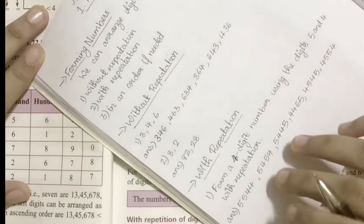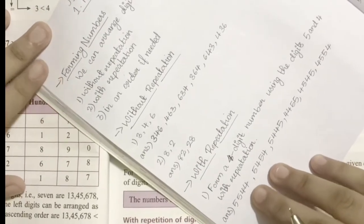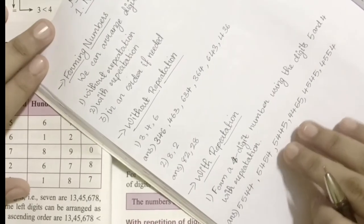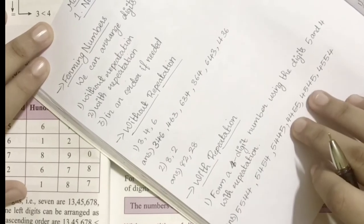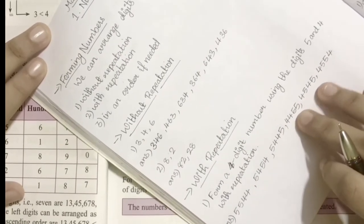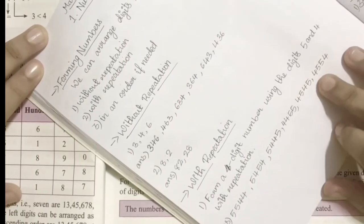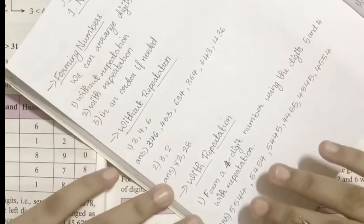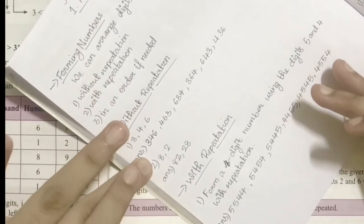Then 4455, 4545, and 4554. See, we got six numbers just as we did before, but the first example was without repetition and this one is with repetition.